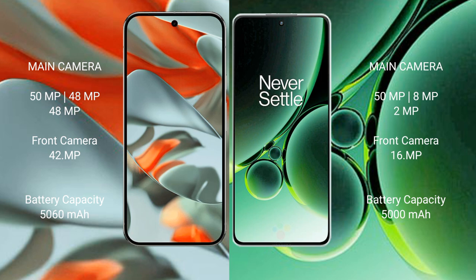Google Pixel 9 Pro XL has a 5060mAh battery with 37W fast charging support. OnePlus Nord 3 has a 5000mAh battery with 80W fast charging support.